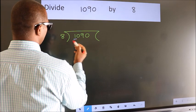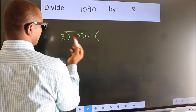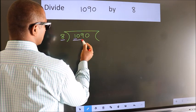Here we have 1, here 8. 1 is smaller than 8, so we should take 2 numbers: 10.